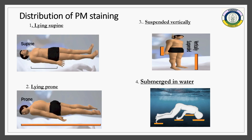Post-mortem staining varies with body position. In the supine position, hypostasis is observed in the lower dependent parts. In the prone position, highlighted anterior areas show hypostasis. If the body is suspended vertically, hypostasis is observed in the lower limbs, hands, and legs. If submerged in water in a certain position, staining appears on the legs, hands, chest, and frontal head. If the body is continuously moving in water, staining distributes throughout the body.